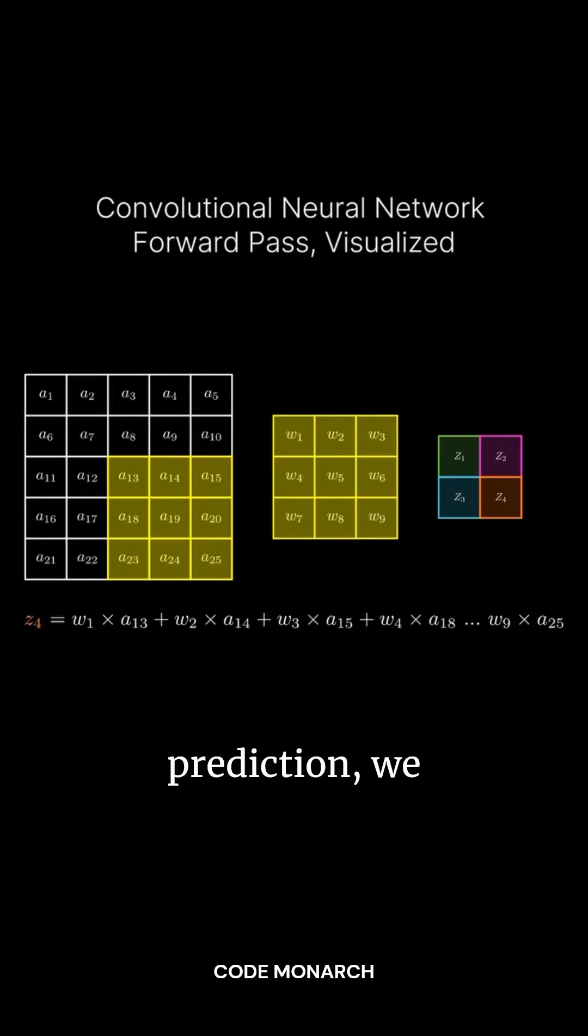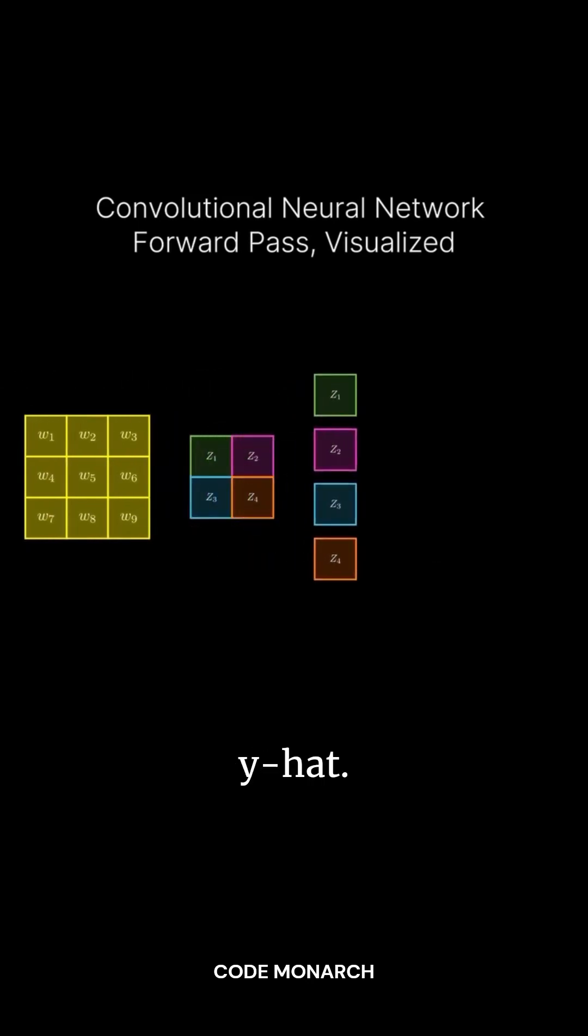We call this layer 1. To make a prediction, we flatten layer 1 into a single vector and output what we call y hat. Finally, y hat helps us calculate the loss, refining our model.